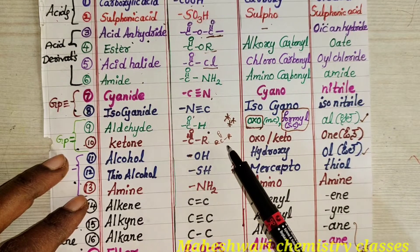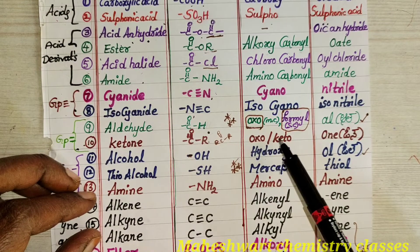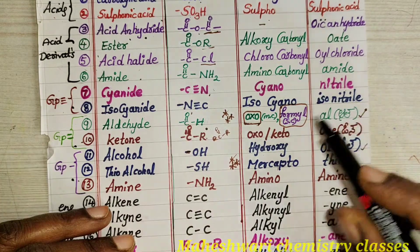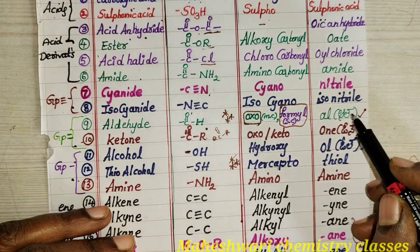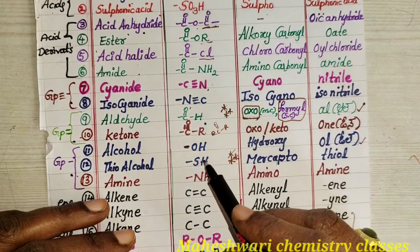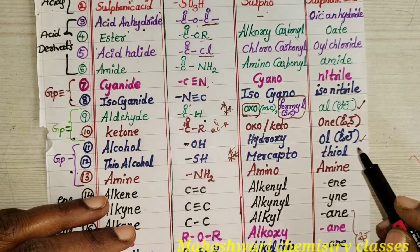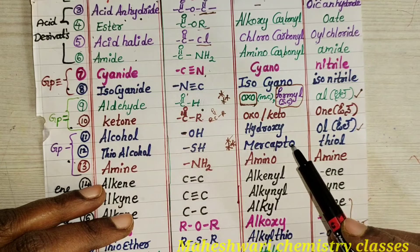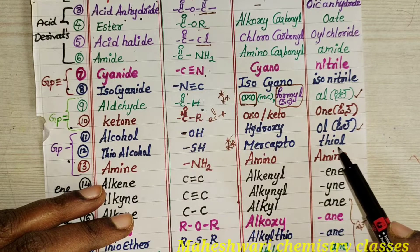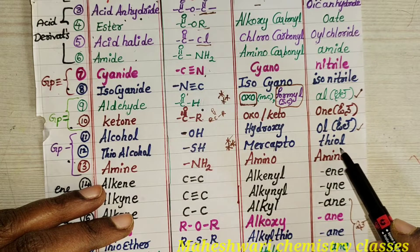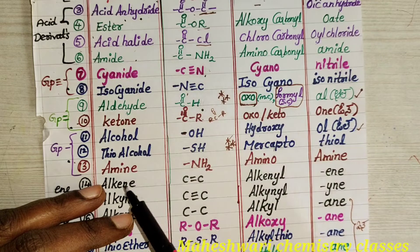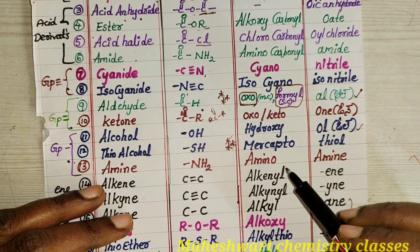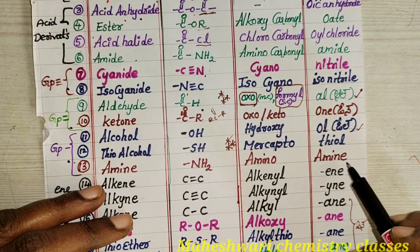Next, ketone: prefix is either AXO or keto, suffix is one. Aldehyde suffix is al. Hydroxy has suffix ol. Thioalcohol (SH): prefix is mercapto, suffix is thiol. Amine (NH2): prefix is amino, suffix is amine. Up to here, these three — alcohol, thioalcohol, amine — are functional groups with single bonds.